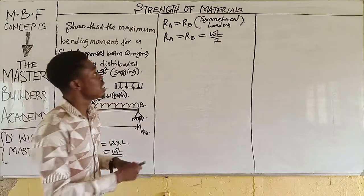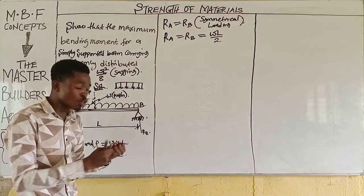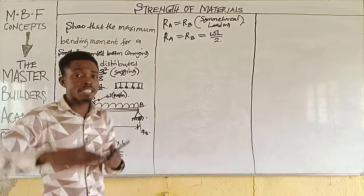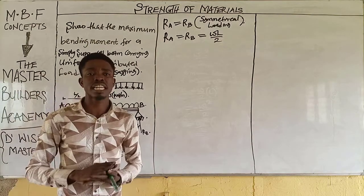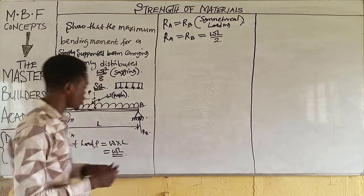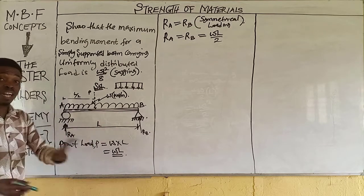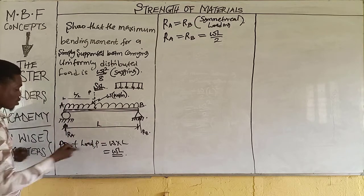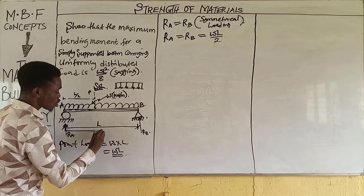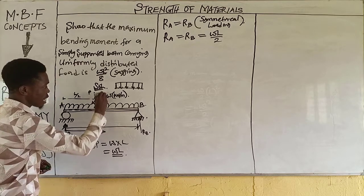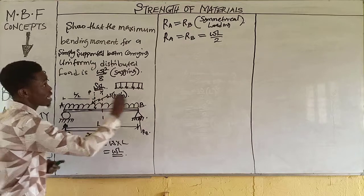The next thing we do is deduce or generate the moment equation. To generate the moment equation, come to support A and take a distance of X from A, then consider a section at that distance.